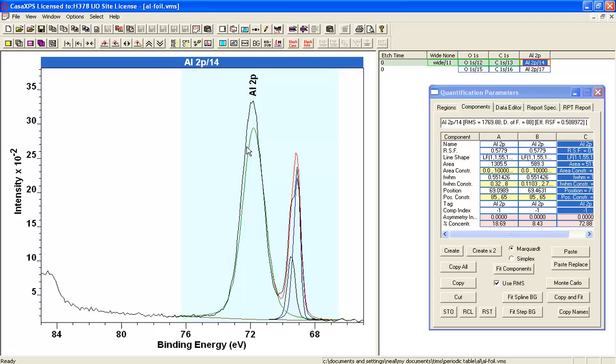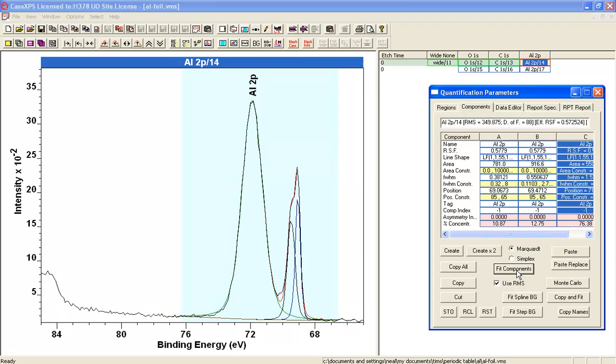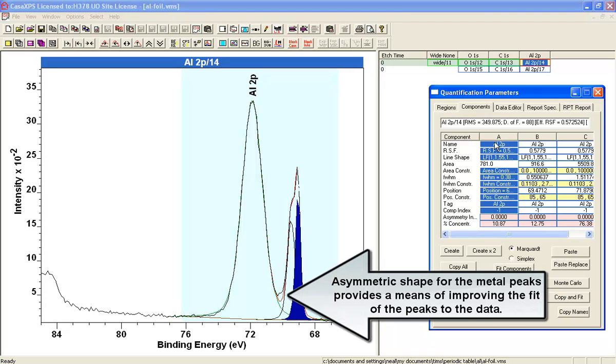So I'm adjusting the oxide peak and then I say fit, and we get a peak model here which is fitting to the data using the three synthetic components. So these two are metal.